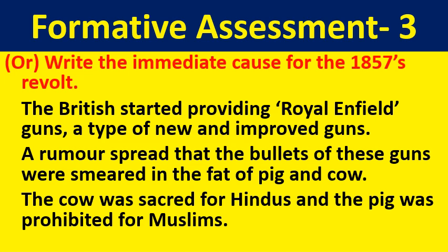Write the immediate cause for the 1857 revolt. The British started providing Royal Enfield rifles — a type of new and improved guns. A rumor spread that the cartridges of these guns were smeared with fat of cow and pig. The cow was sacred for Hindus and the pig was a forbidden animal for Muslims. So Hindu and Muslim soldiers refused to use the greased cartridges. This led to the immediate cause for the revolt.